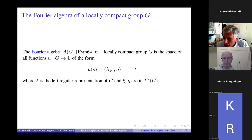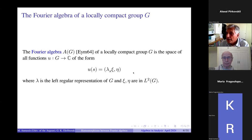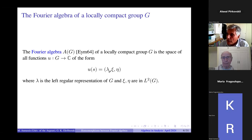If you look at this formula, it is not clear at all that these functions form an algebra — it is not even clear that they form a linear space. If you have two functions lambda_s xi eta and lambda_s xi-prime eta-prime, why should there exist some lambda_s xi-double-prime eta-double-prime? It's not obvious at all.